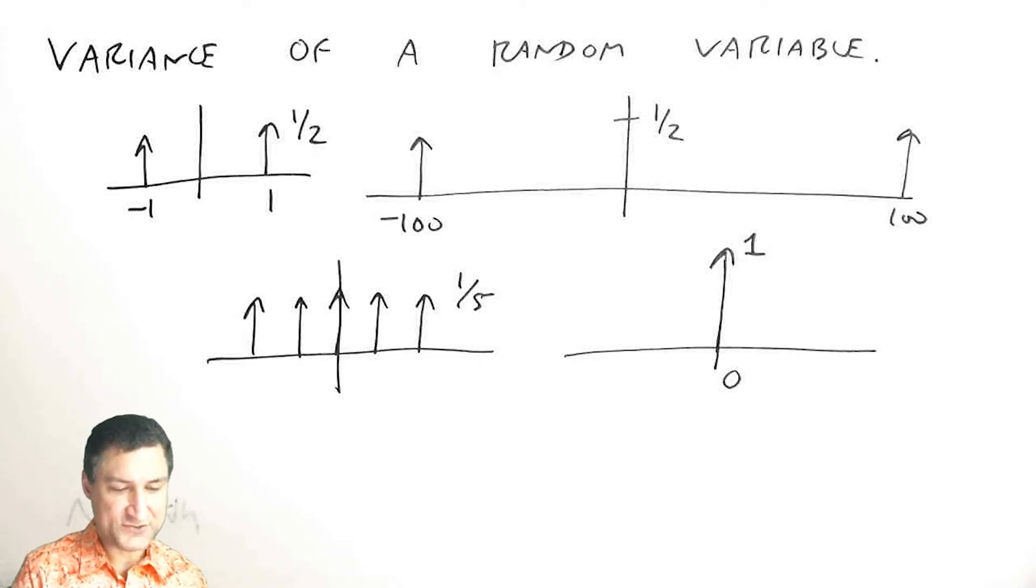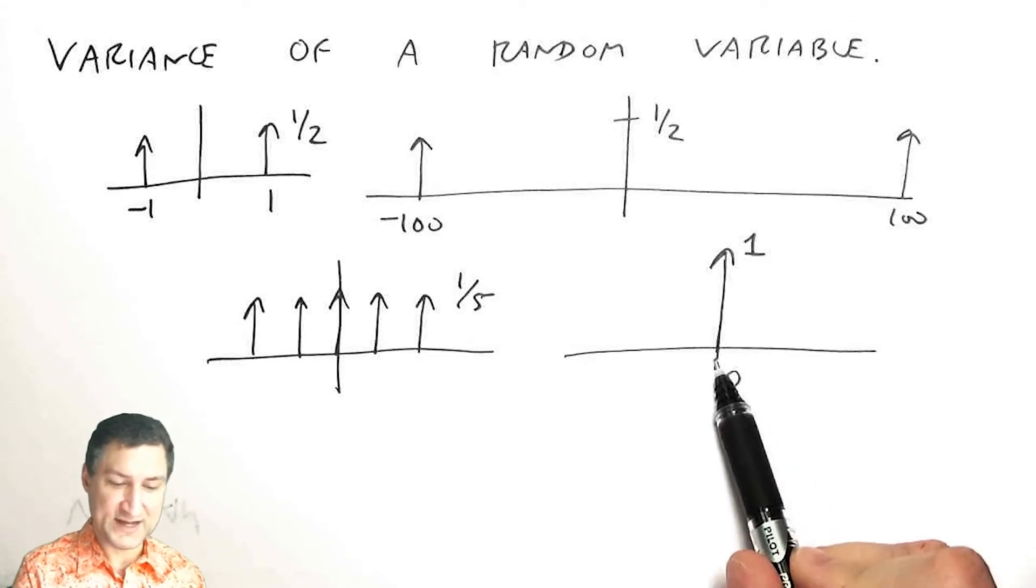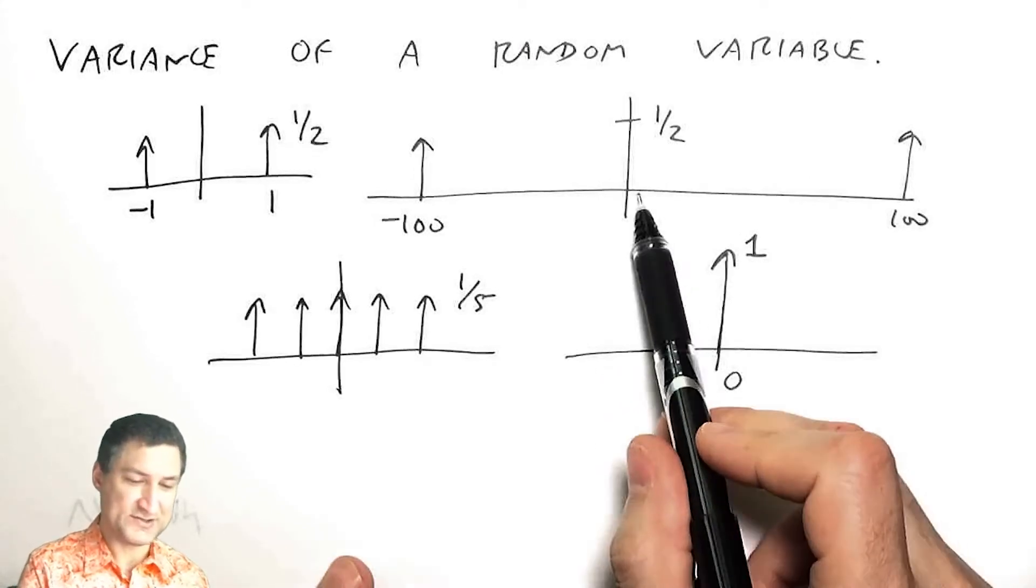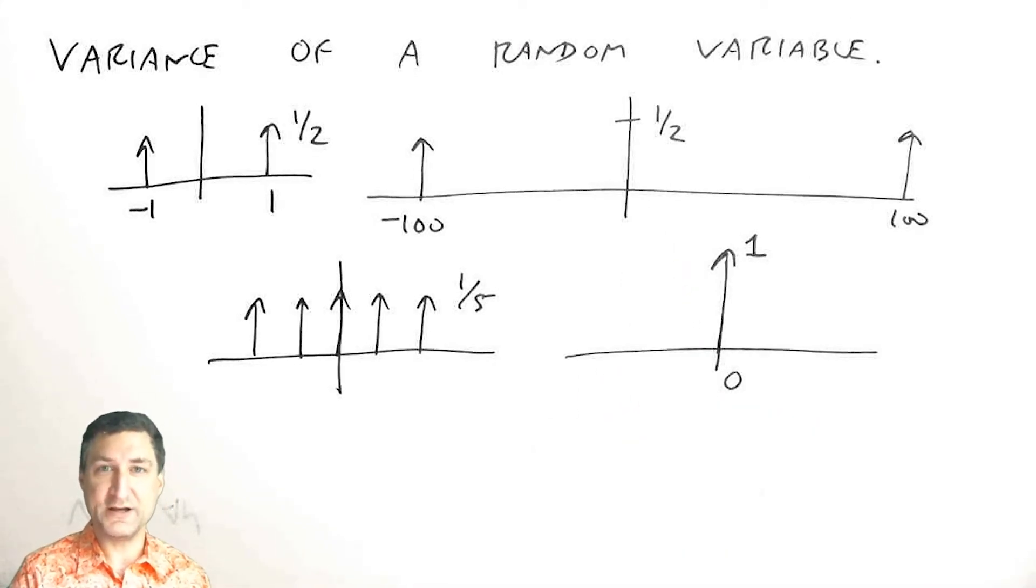What makes these random variables different is how spread apart they are from the mean. This is not spread apart at all, whereas this is super spread apart. And that's what the variance encapsulates.